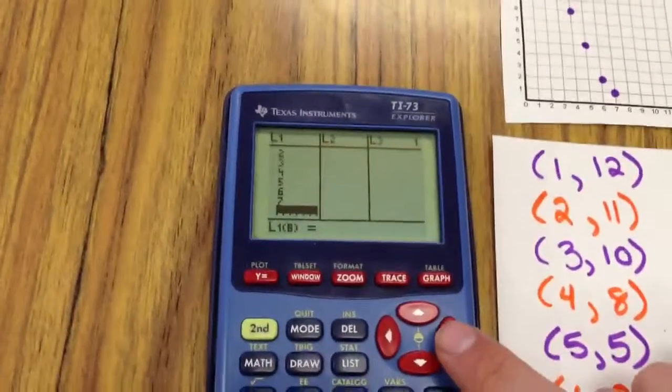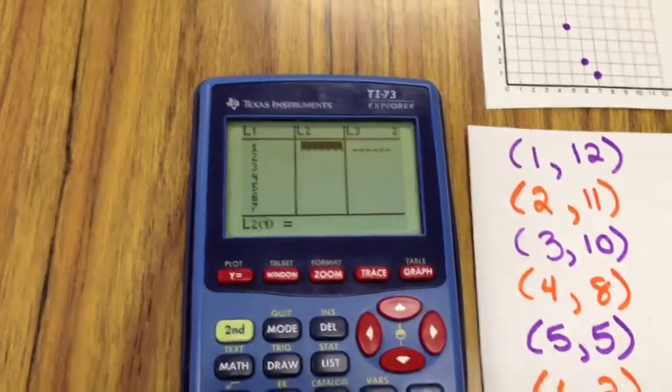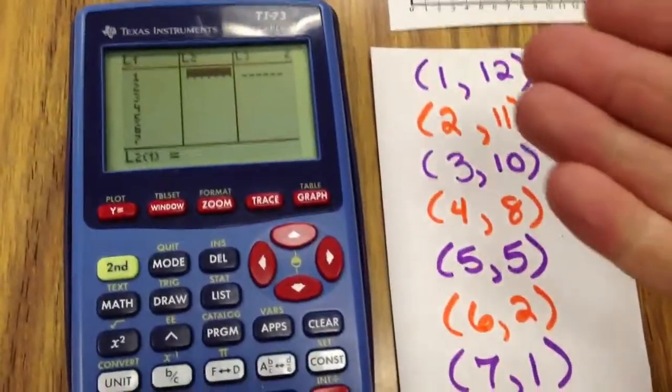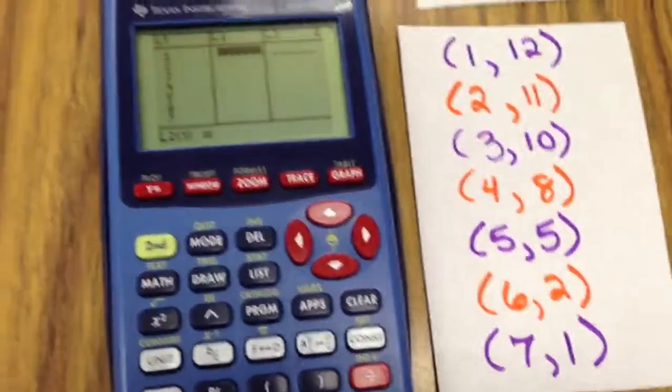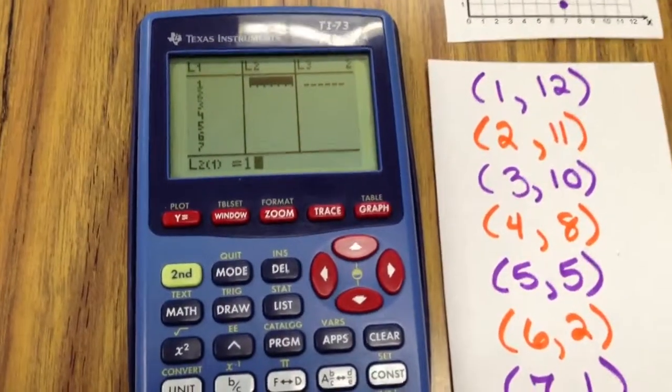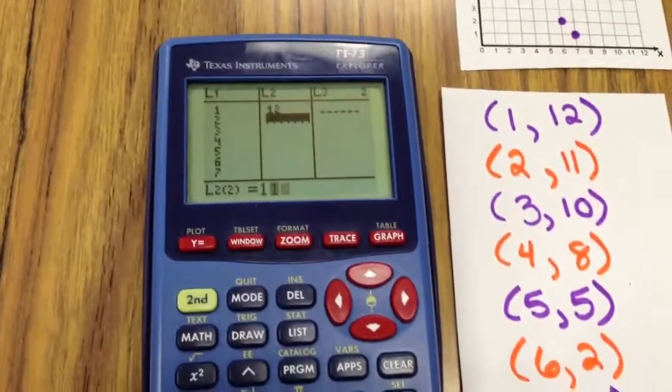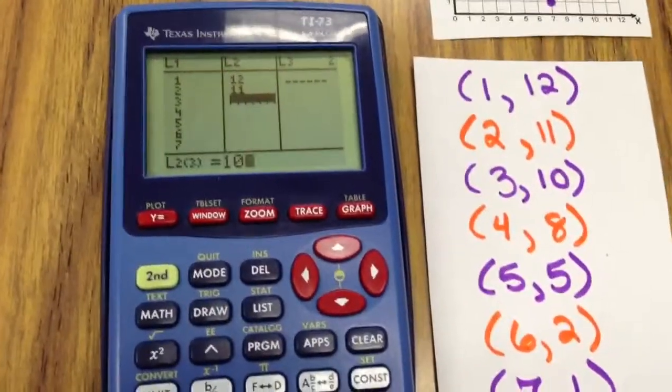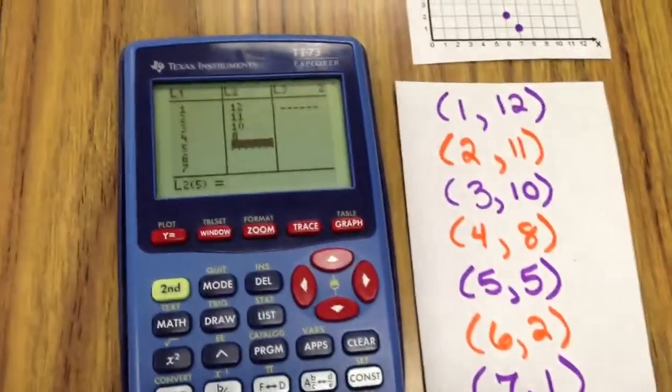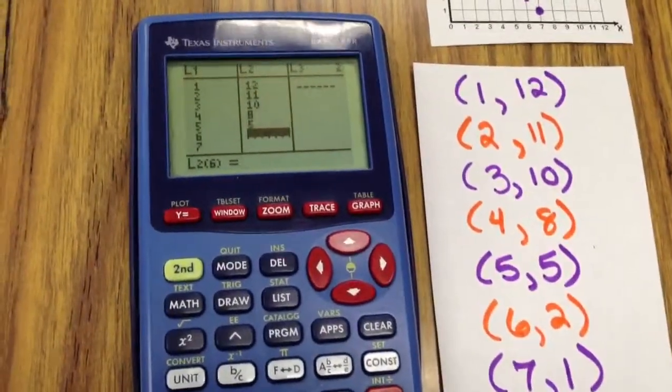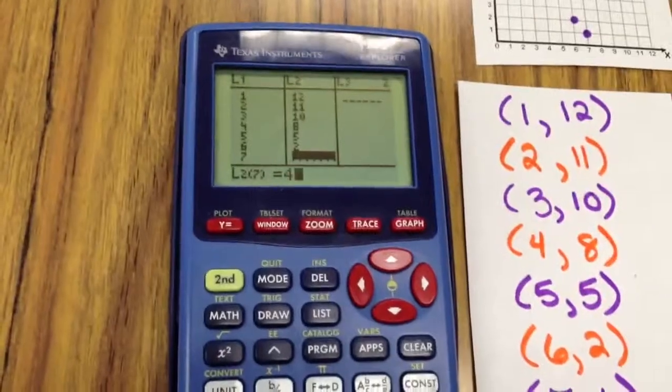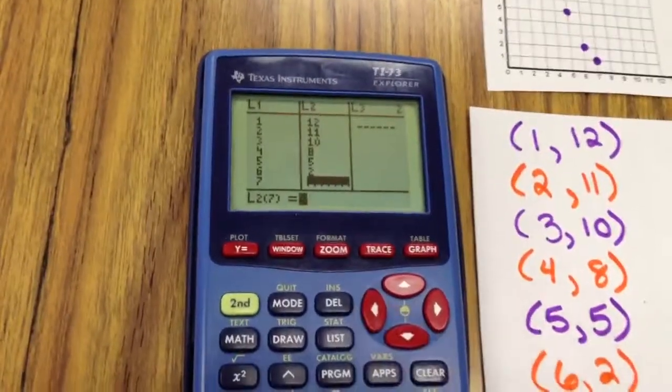Alright, here we go to line 2. We're going to put in our range, our y values. Here we go, y'all. 12, enter. 11, 10, 8, 5, 2, and 1. Oh, that's a 4. Just kidding. 1.